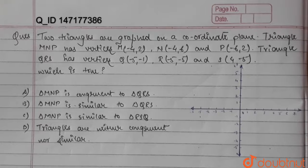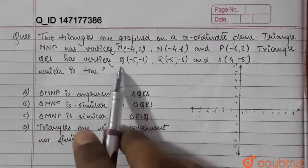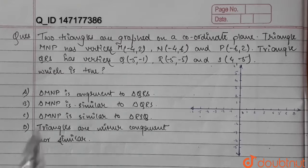In order to get those triangles, let's plot them in the coordinate system. We are given M, N, and P and Q, R, and S with their coordinate systems. Let's start and map this in the coordinate system.